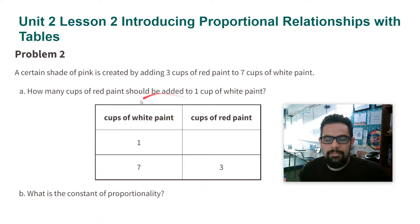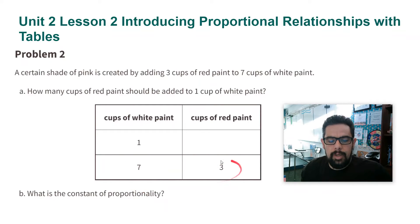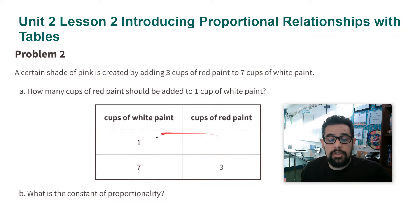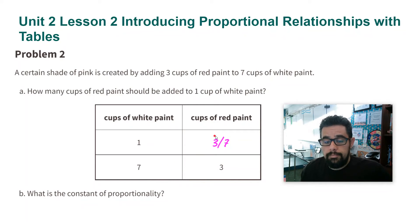Here we have a proportional relationship — we have a table and equal ratios. So seven cups of white paint to three cups of red paint. Because these are equal ratios, to find this one I'm going to divide both values by seven, and that gives me three over seven. So I can use a scale factor of one over seven going this way.